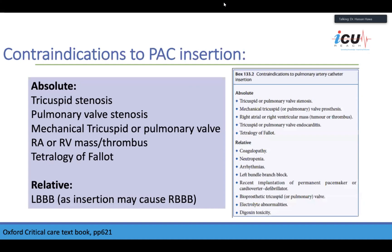Contraindications to PA catheter insertion include absolute and relative contraindications. Since it's a balloon-tipped catheter, stenosis in any valve you pass through is a contraindication. A mechanical tricuspid or pulmonary valve is also a contraindication. A thrombus or mass in the right atrium or right ventricle is contraindicated, as is tetralogy of Fallot. For relative contraindications, there is a possibility of causing right bundle branch block during insertion, so if the patient already has left bundle branch block, they might develop complete heart block.